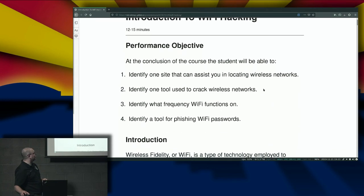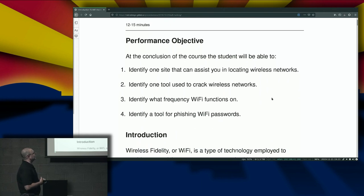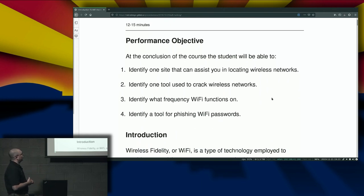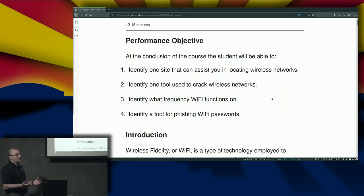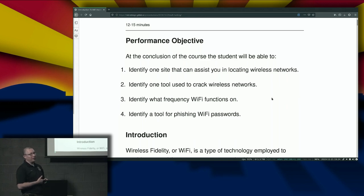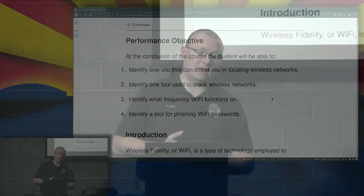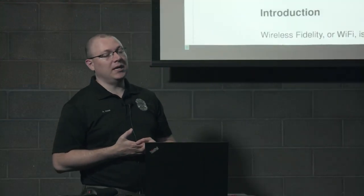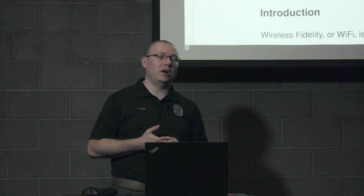Our performance objectives will include identifying at least one site that can assist you in locating wireless networks. We're going to identify at least one tool used to crack wireless networks, identify what frequencies Wi-Fi functions on, and then identify a tool for phishing Wi-Fi passwords, which is probably one of the more effective methods for getting people's information when you are out and about.